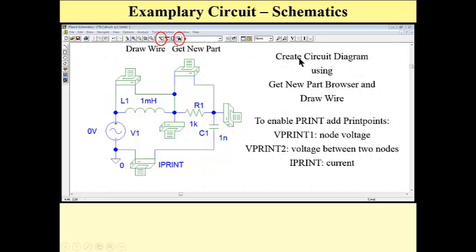We have to create a circuit diagram using getNewPartBrowser and drawWire. This is browser and this is drawWire. To enable print, unfortunately, in schematics we have to add special parts which are called VPRINT1, VPRINT2, or IPRINT.